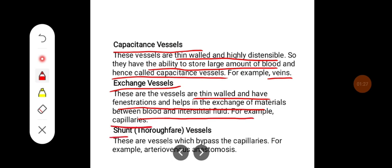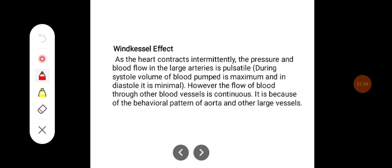Shunt or thoroughfare vessels are bypass capillaries — for example, arterio-venous anastomoses.